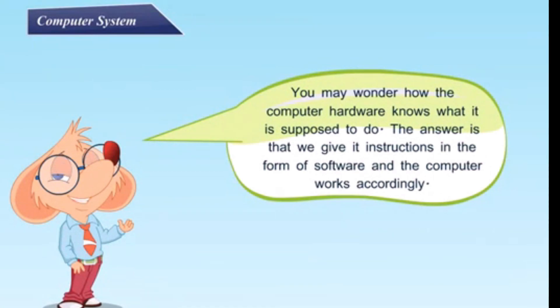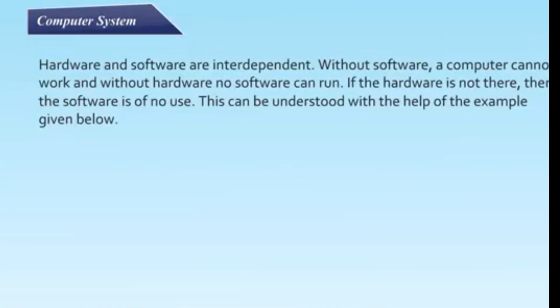You may wonder how the computer hardware knows what it is supposed to do. The answer is that we give it instructions in the form of software and the computer works accordingly. Hardware and software are interdependent. Without software, a computer cannot work and without hardware, no software can run. If the hardware is not there, then the software is of no use. This can be understood with the help of the example given below.